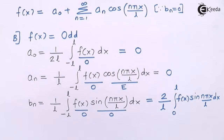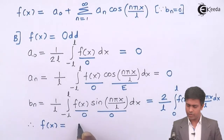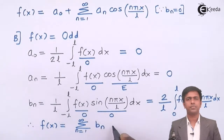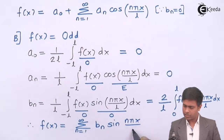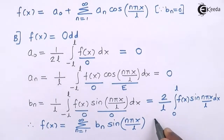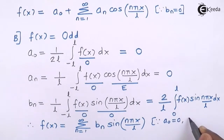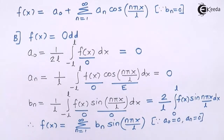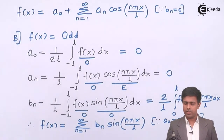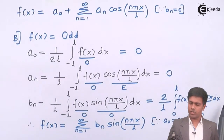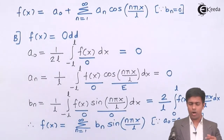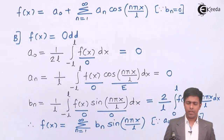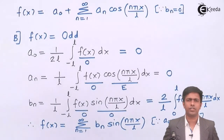In case of an odd function, the Fourier series has only one component - bₙ. Therefore, the Fourier series is f of x equal to summation from n equals one to infinity of bₙ sin(nπx/l). Since a naught equals zero and aₙ equals zero, whenever we find a function is odd, we find the Fourier coefficient bₙ using this formula. In the next video, we are going to solve numerical problems based on even and odd functions.